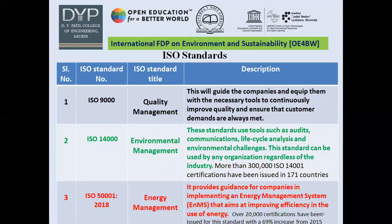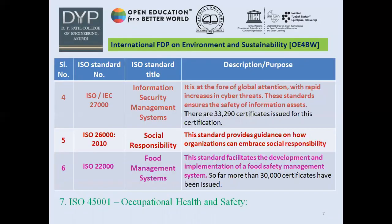The third one is ISO 50001, established in 2018, meant for energy management. It provides guidance for companies in implementing an energy management system that aims at improving efficiency in energy use. Over 20,000 certifications have been issued for this standard, with a 69% increase from 2015. The fourth standard is ISO/IEC 27000, meant for information security and management systems. It is a focus of global attention due to the rapid increase in cyber threats. These standards ensure the safety of information assets, and there are 33,290 certificates issued for this certification.